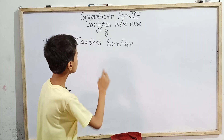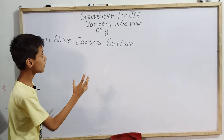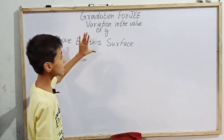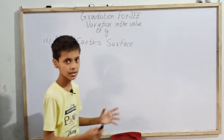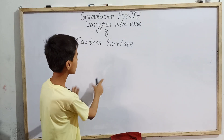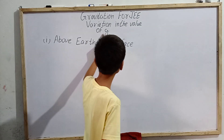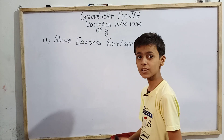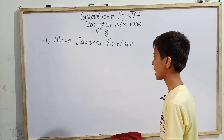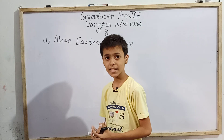In my first video on Gravitation for JEE, we studied what is gravitational force, the universal law of gravitation, and what is gravity — that is, the gravitational force exerted on us by the Earth. In my last video, we studied what is acceleration due to gravity, denoted by the letter g. In this video, we are going to study variation in the value of g — that is, variation in the value of acceleration due to gravity.